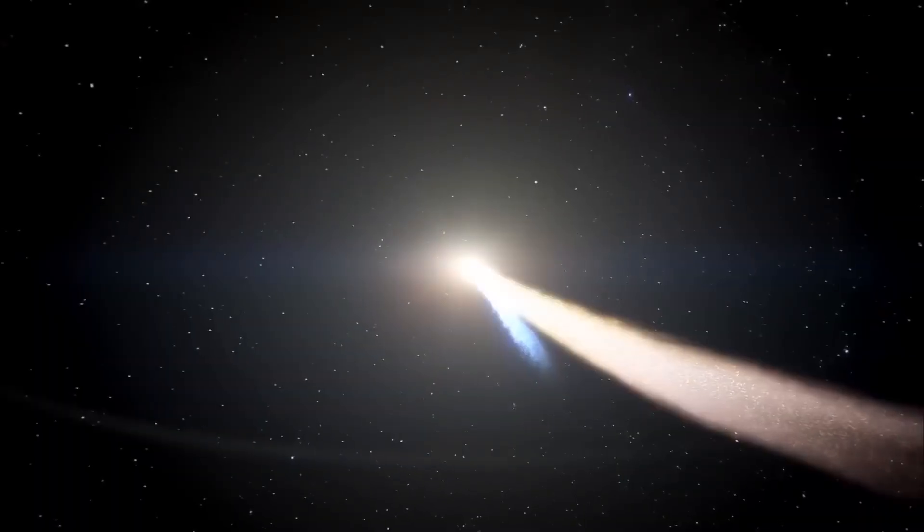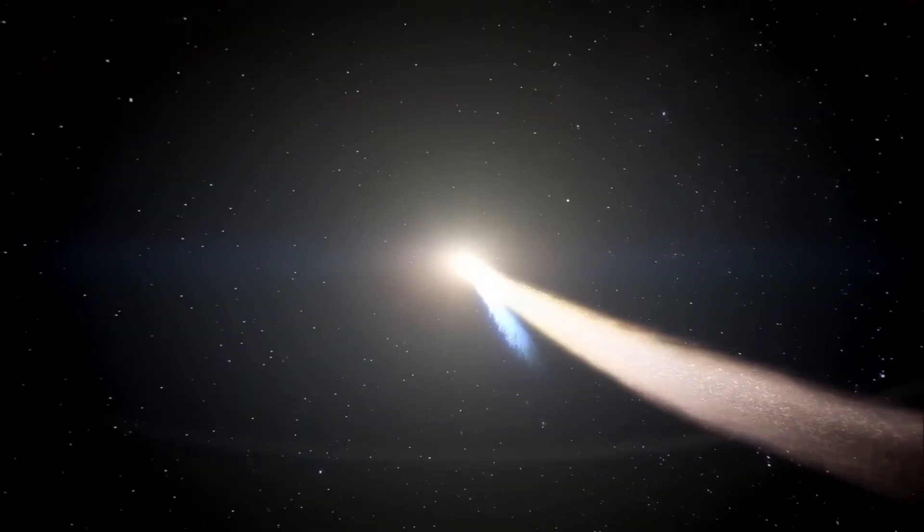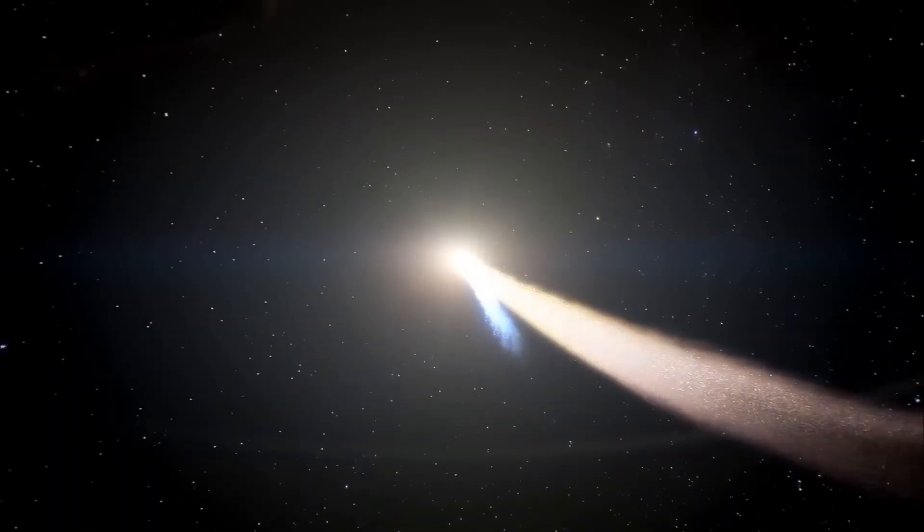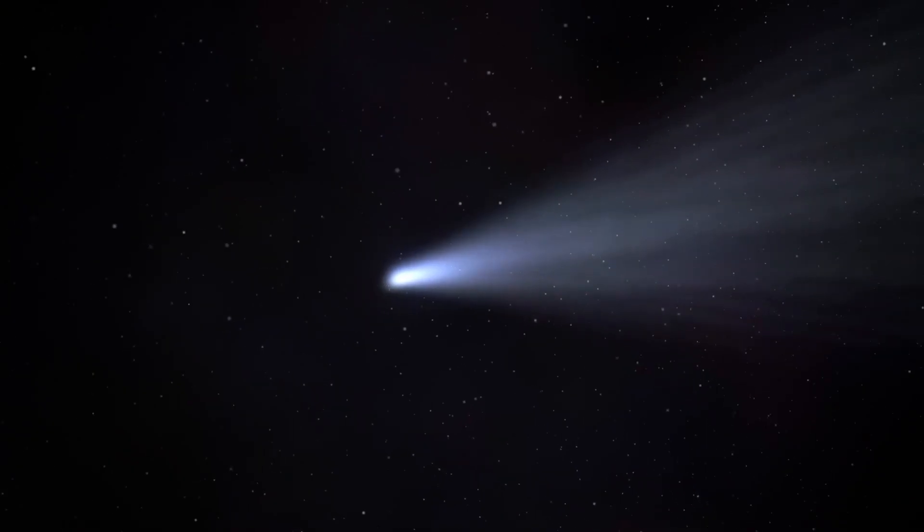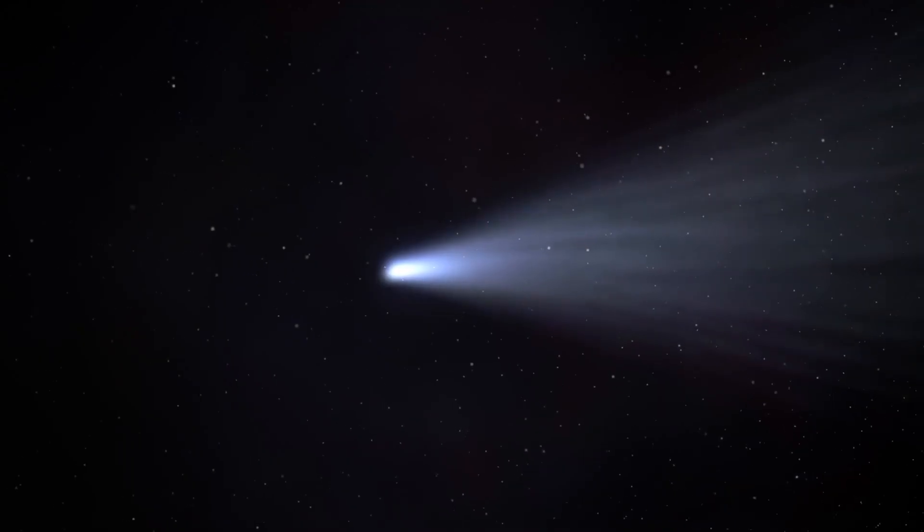A spacecraft observed comet Enke's ion tail being completely ripped off by a CME. This kind of interaction could create an even more diffuse, yet expansive cloud of material around 3I Atlas.